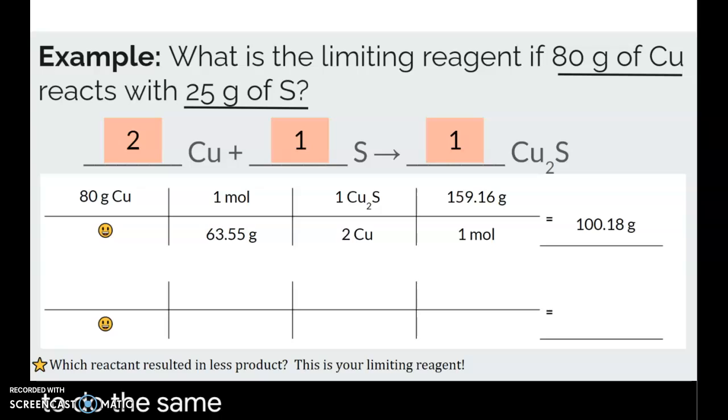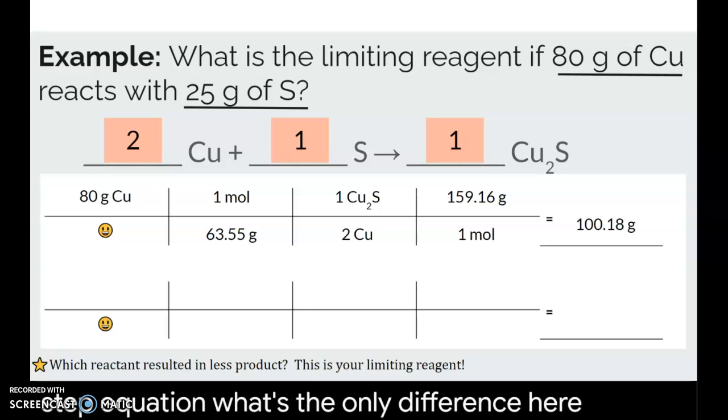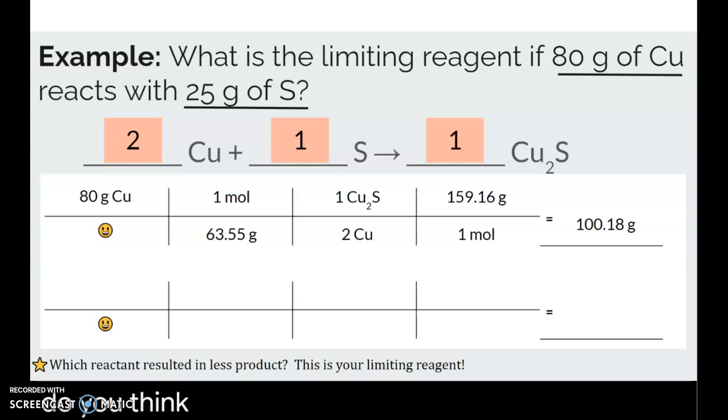And so then we're just going to do the same exact thing for this next 3-step equation. What's the only difference here? What do you think? Yes. So you're just doing sulfur now. So you have 25 grams of sulfur. And what's the molar mass of sulfur? Check your periodic table real quick. It's 32.06. Yep. 32.06.